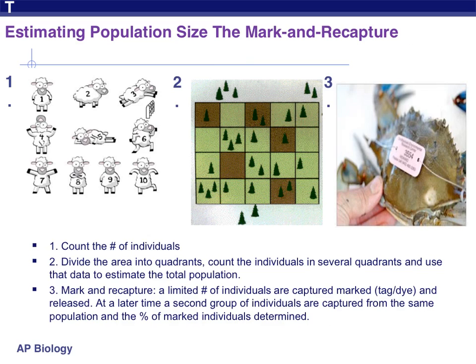Method three is called the mark and recapture technique. A limited number of individuals — let's say about 20 — are captured at random and marked with either a dye or a tag. Then you release them back into their environment. At a later time, a second group of animals is captured at random from the same population, and the percentage of marked individuals is determined. So let's say 10% of the animals in the second group is a recapture — you've already seen and marked these animals. Then the original 20 represented 10% of the population, and the population is thus 200. You're just using a percentage of what has already been captured to determine your total population.